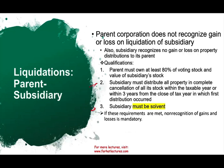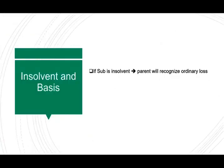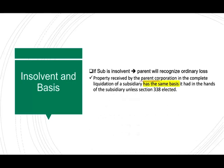If these three requirements are met, non-recognition is mandatory — they cannot recognize a gain or a loss. If the subsidiary is insolvent, the parent will recognize ordinary loss. Now, what is the basis to the parent company? The basis is the same. The property received by the parent in the complete liquidation of the subsidiary has the same basis as in the hands of the subsidiary, unless we elect Section 338. Generally speaking, the same basis carries over, because if it's the same company, nothing should change. Think of it like changing the name of the company — it's a merger where the company used to be called A, now it's called B, but it's the same company; we just merged it into the parent.